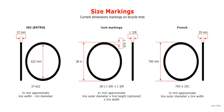ISO 5775 is an international standard for labeling the size of bicycle tires and rims. The system used was originally developed by the European Tire and Rim Technical Organization. It is designed to make tire sizing consistent and clear.